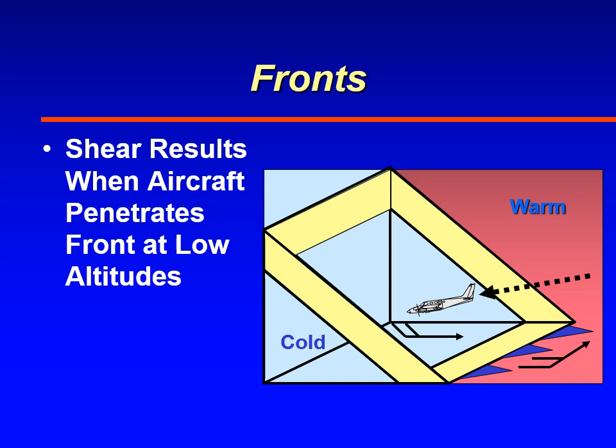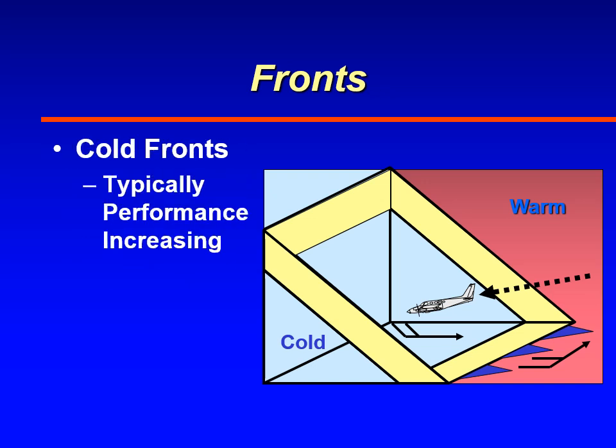When an airplane penetrates a front at low altitudes — below 2,000 feet AGL — it's going to experience shear. Typically, the shear with cold fronts is performance-increasing, because as you're landing you're landing into the wind. Cold fronts are steep enough that unless they're right on top of the airport, you won't have problems with shear — you'll more likely have problems with surface friction. But it can happen, so you need to look at the charts.